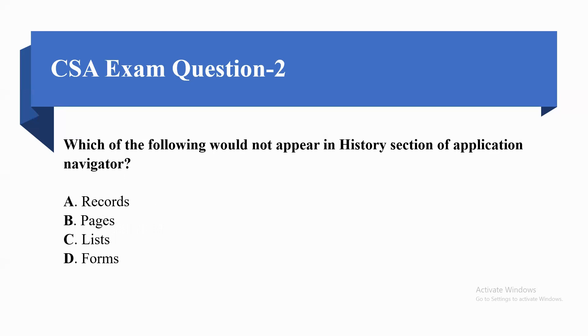Next question: which of the following would not appear in the history section of the application navigator? Options are A. Record, B. Pages, C. List, or D. Form. The correct option would be option B, Pages.